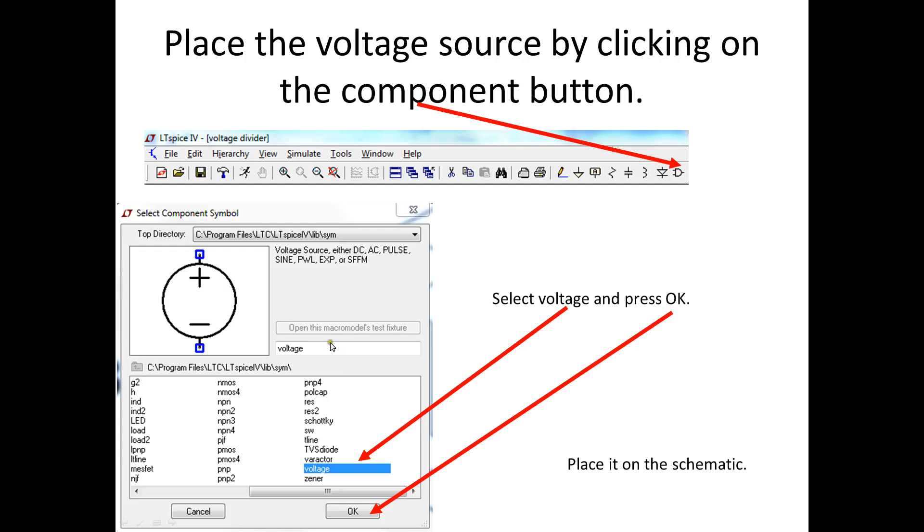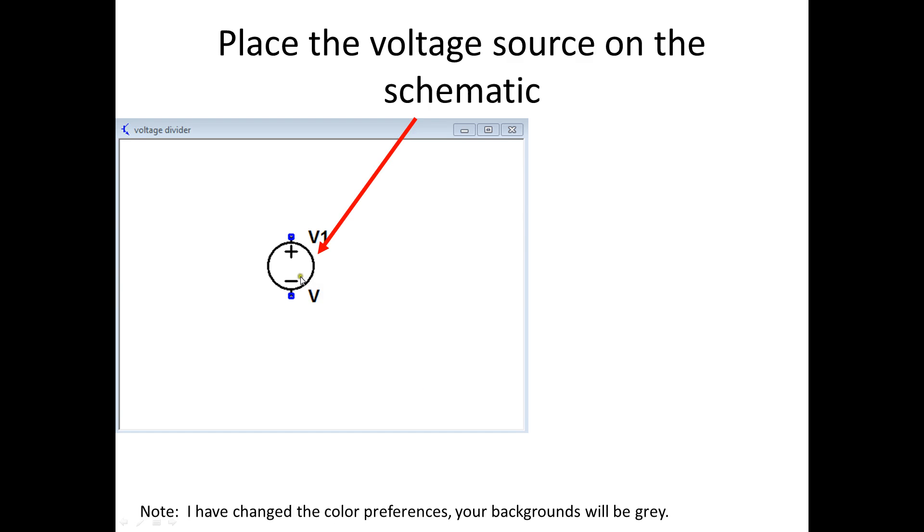All right, now we need that battery, the 3.3V battery that we were using. We need to place that, so we'll click on this component icon and this pop-up will appear. We select voltage, OK, and then we'll be ready to place it on the schematic.